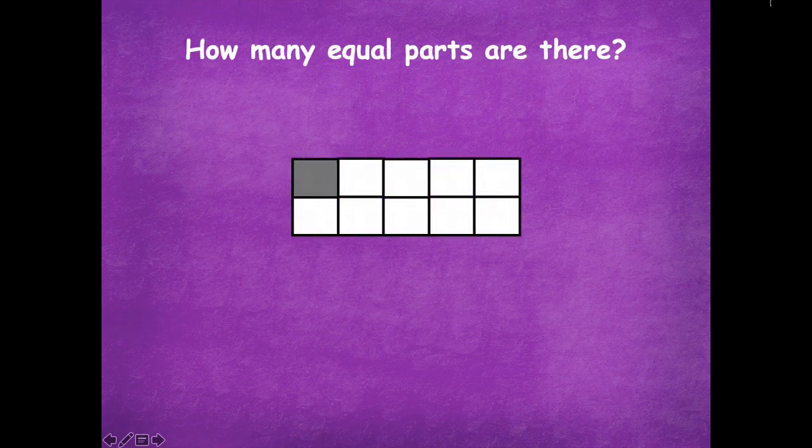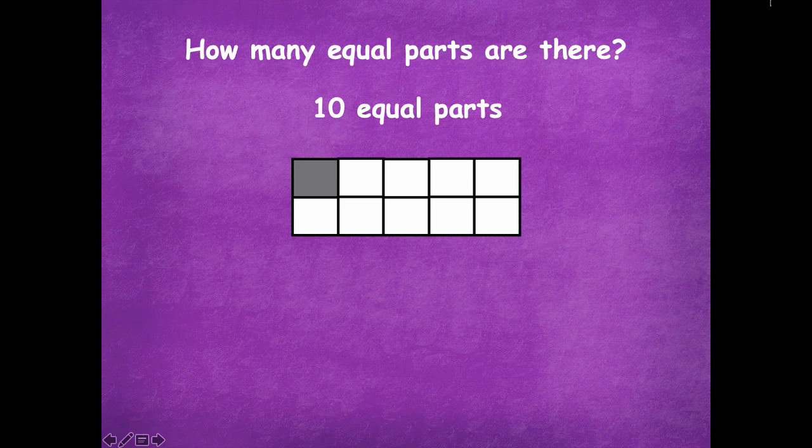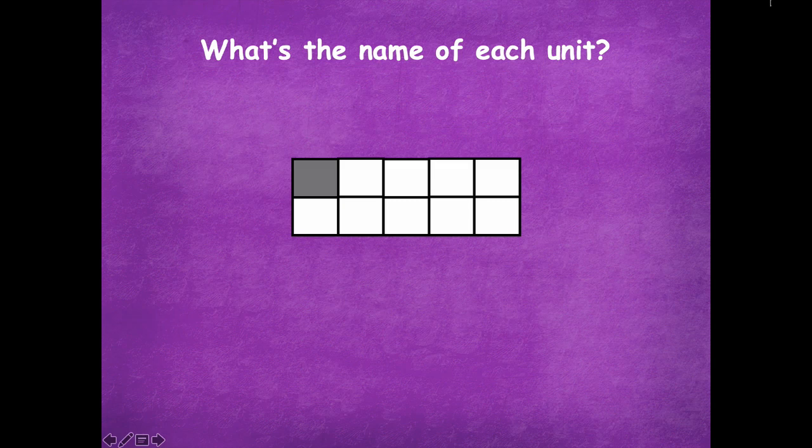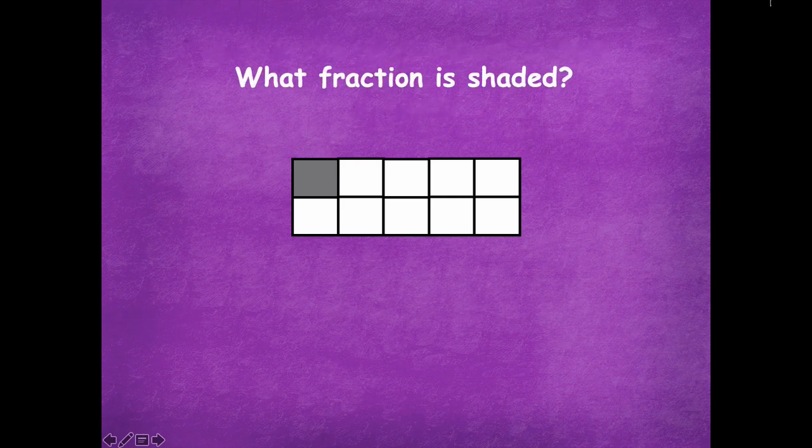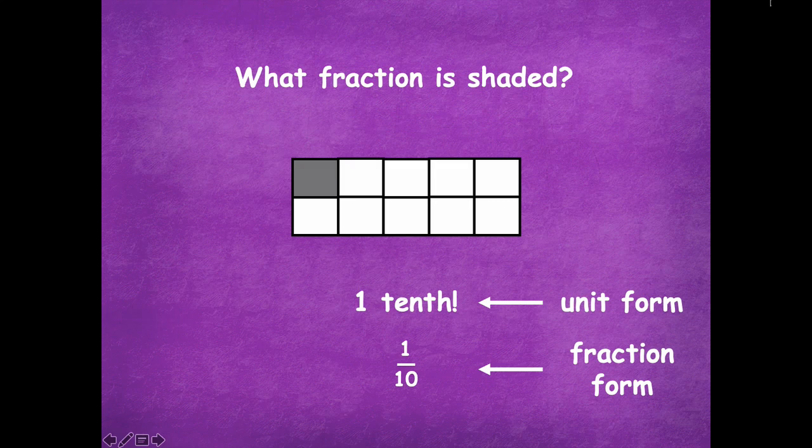All right, so how many equal parts are there in this shape? Ten equal parts. What's the name of each unit? One tenth. What fraction is shaded? Go ahead and write that down on your dry erase board. What fraction is shaded? You could say one tenth, or numerically you could say one with the line, and then ten. So that's our unit form. Unit form is kind of like in words. Fraction form is numerically, and then this is a unit fraction, because it's one part.